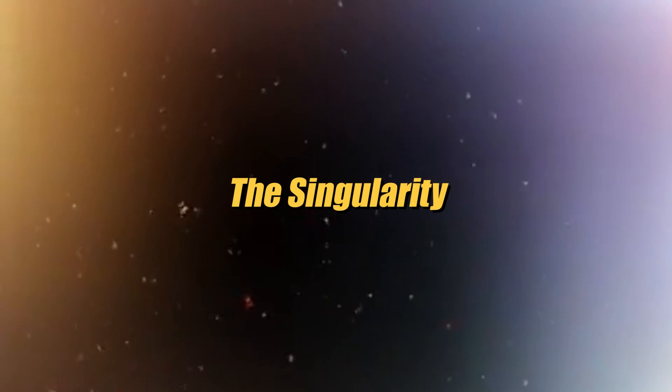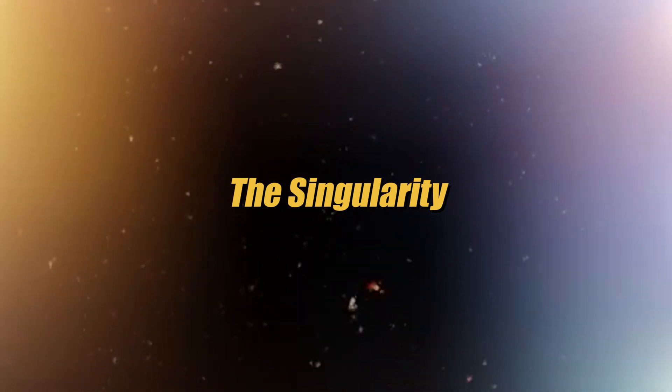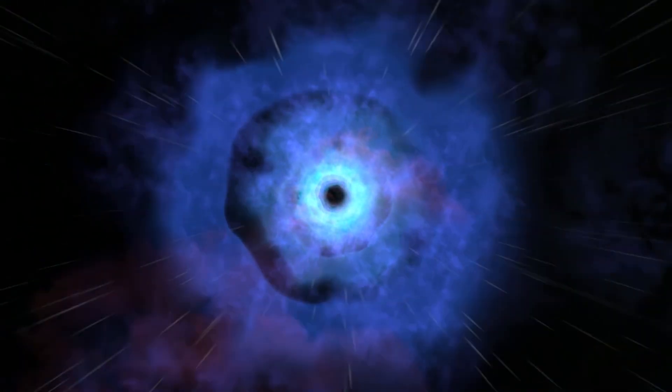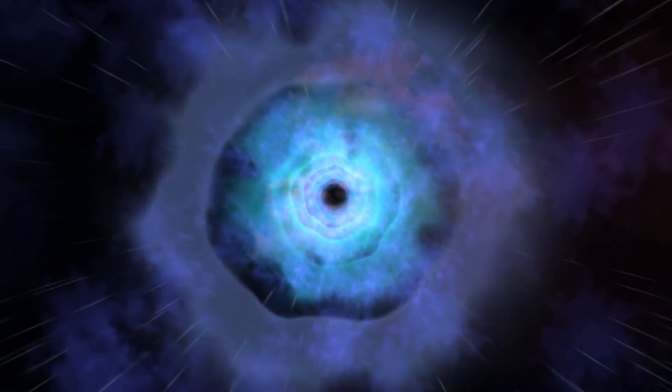Finally, the third layer is the singularity. This is where everything that enters the black hole is astronomically compressed into a point of infinite density. The singularity is a point in space-time where the laws of physics as we know them break down. You're probably wondering what lies beyond the third layer called the singularity, right?